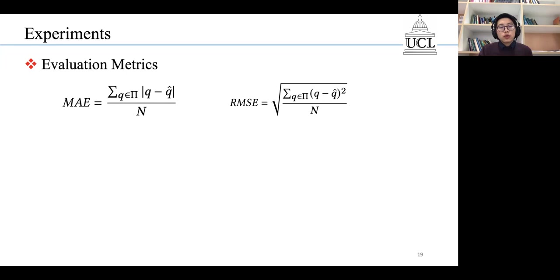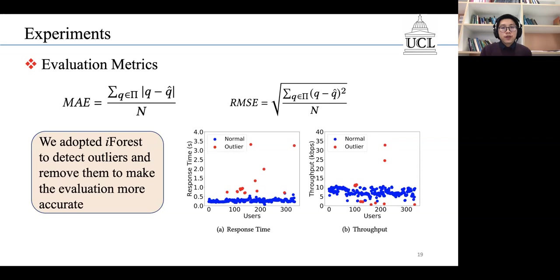So to make the evaluation more correct, we need to remove outliers from the dataset. Unfortunately, we do not have the outlier labels, so we adopt the isolation forest algorithm to detect outliers.